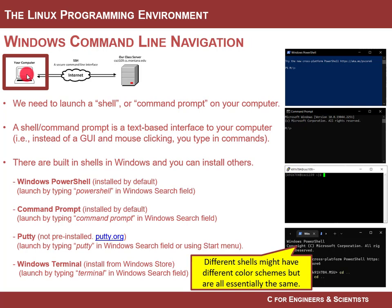We are going to access that over an internet connection through a secure SSH, or Secure Shell, but we'll do that from a Windows machine. Almost everybody uses Windows for engineering now, so in order to get to a command line interface we're going to launch what we call a shell or a command prompt. These are basically just dark windows with nothing in them except text, and you type in commands and it responds.